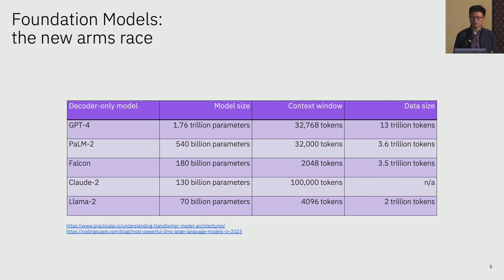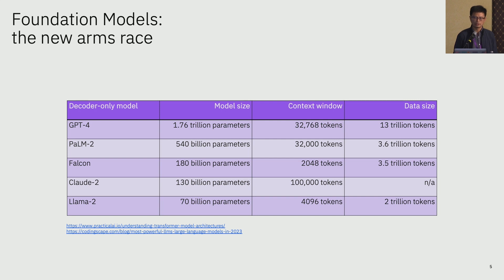You are able to put in a lot of context as input or prompt into these models now. In fact, a single novel can now be provided as a prompt into one of these models. And if you look at the data, there are a lot of tokens being consumed to train the models. The largest one is GPT-4, with 13 trillion tokens that have been prepared and fed into training to give the model its language capabilities.